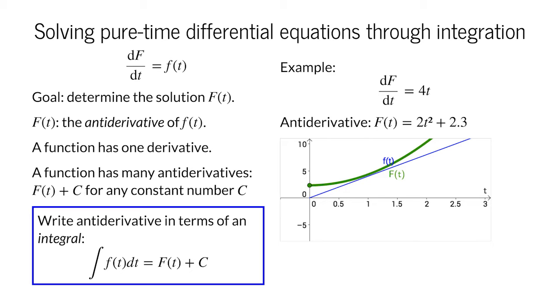The dt indicates that t is the variable of integration. For our example function, we can write that the integral of 4t dt is 2t squared plus c.